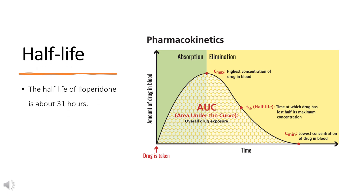The observed mean elimination half-lives for iloperidone, P88, and P95 in CYP2D6 extensive metabolizers (EM) are 18, 26, and 23 hours respectively, and in poor metabolizers (PM) are 33, 37, and 31 hours respectively.